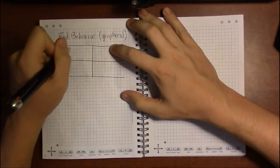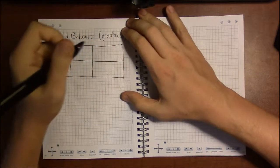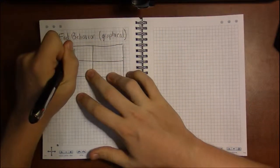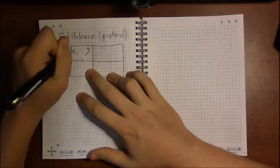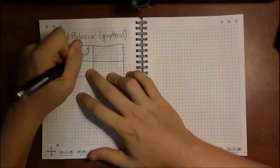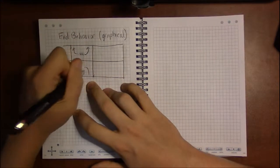Okay, so since we have two ends, we have four different possibilities. We could have that the left and right ends go up. We could have that the left and right ends go down.